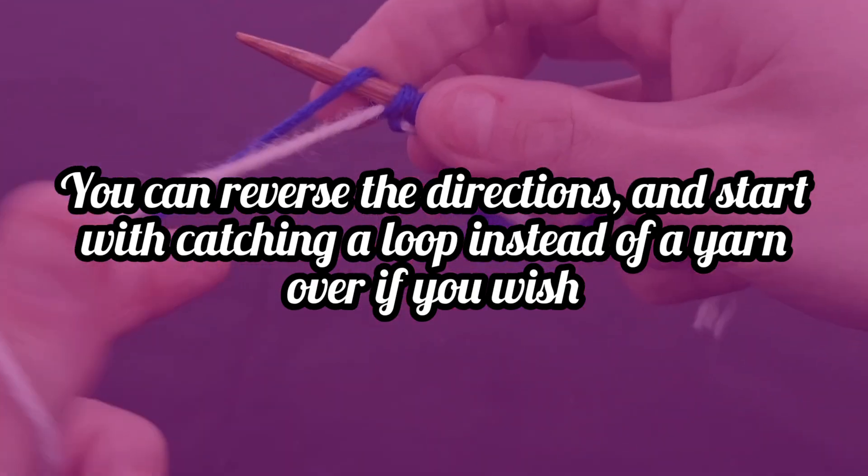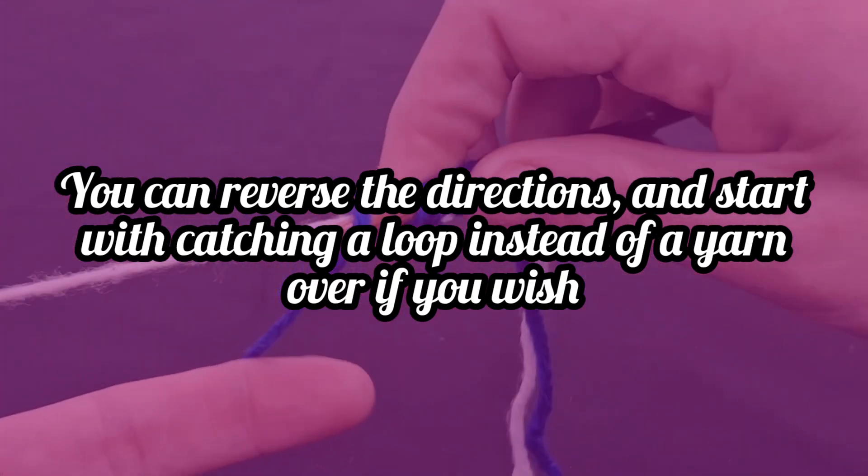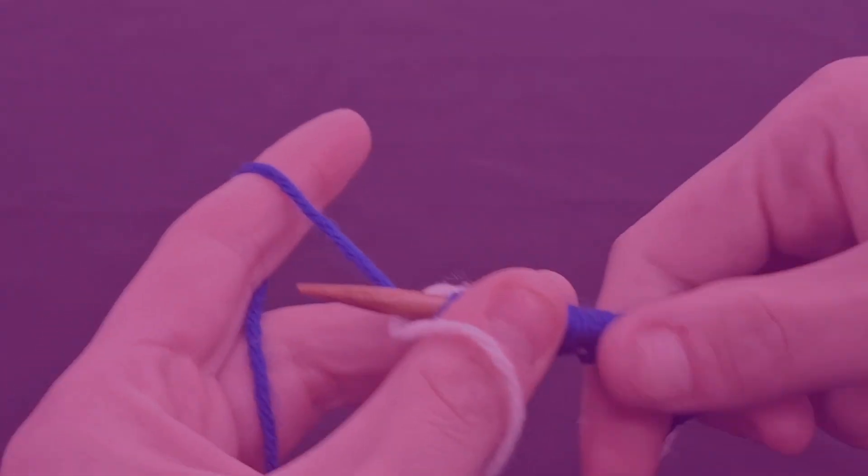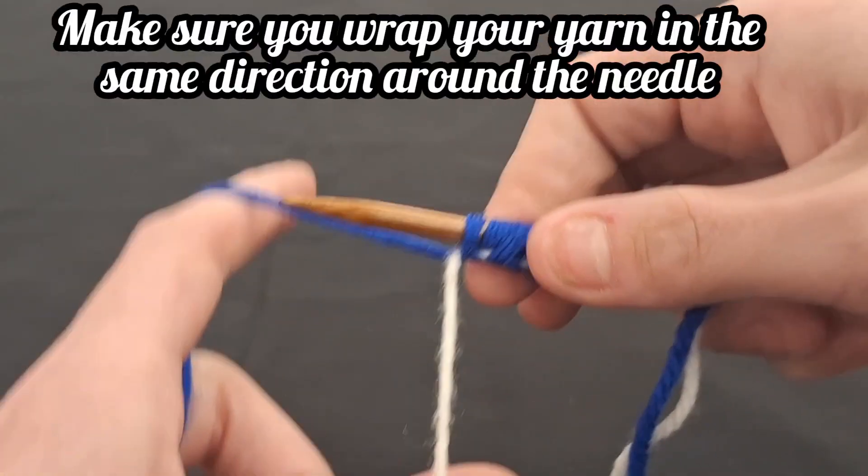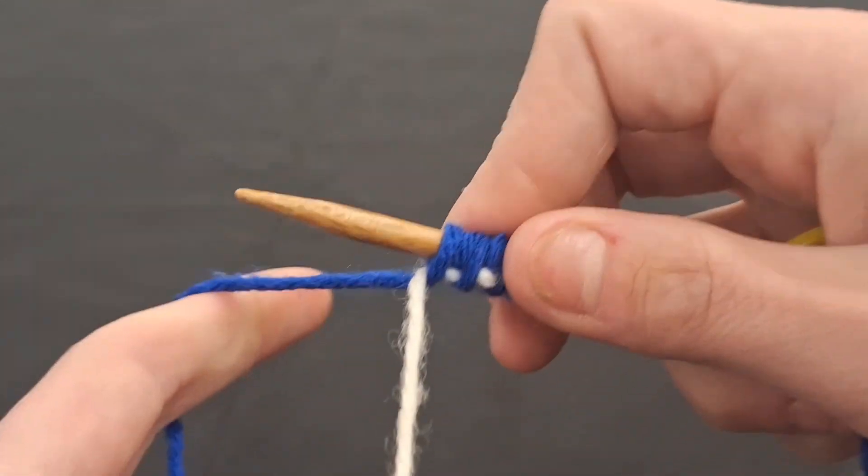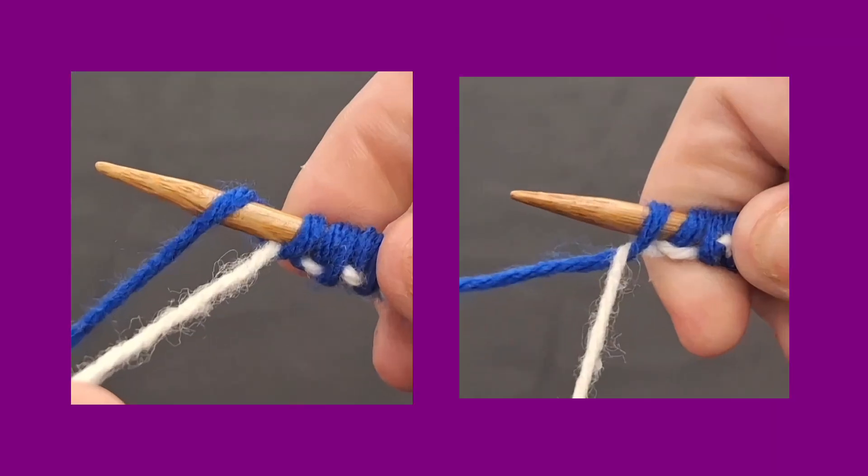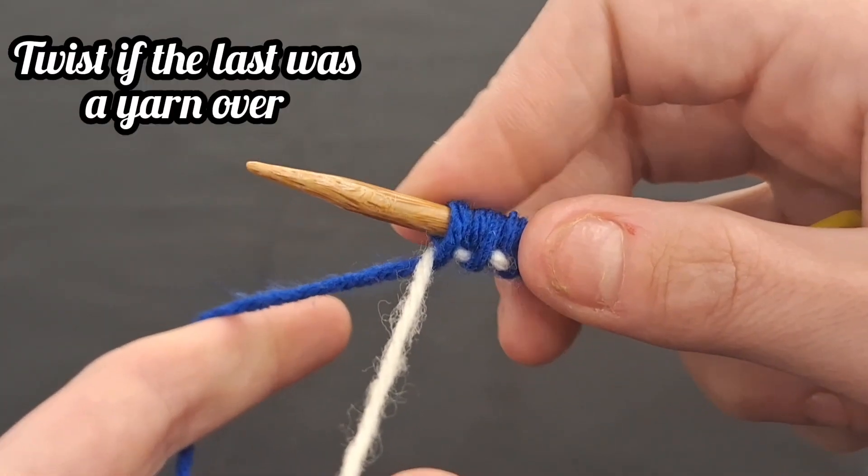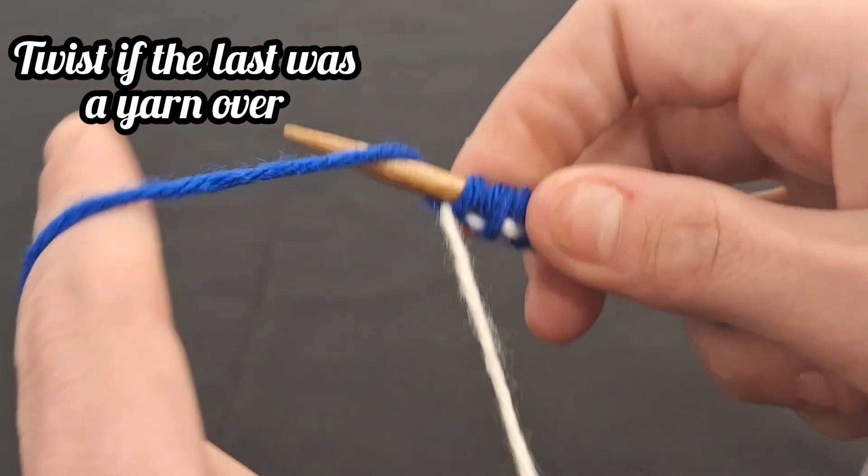If you prefer, you can reverse these directions and start with catching a loop of yarn instead of a yarn over, should you wish. Make sure the direction in which you are wrapping the main yarn over your needle remains the same. Depending on how your last stitch is formed, it may need to be immediately followed by twisting the two yarns together slightly before knitting your first stitch. If your last stitch was a yarn over, that will be the case, otherwise your last stitch will come undone. If your last stitch was created by bringing a loop underneath the scrap yarn, no such step will be necessary.